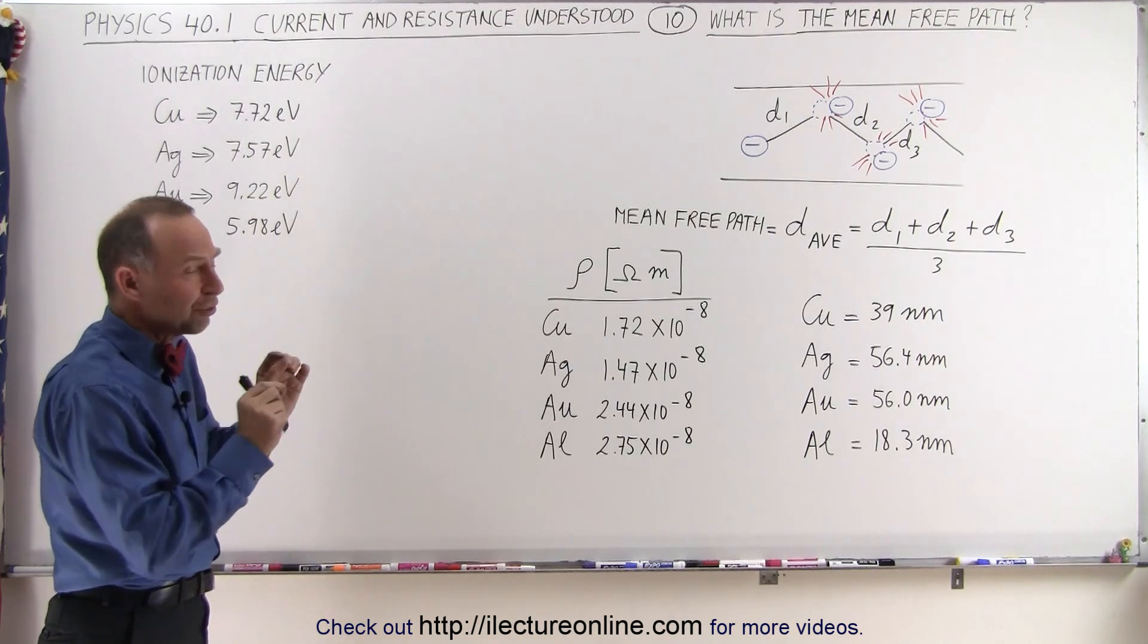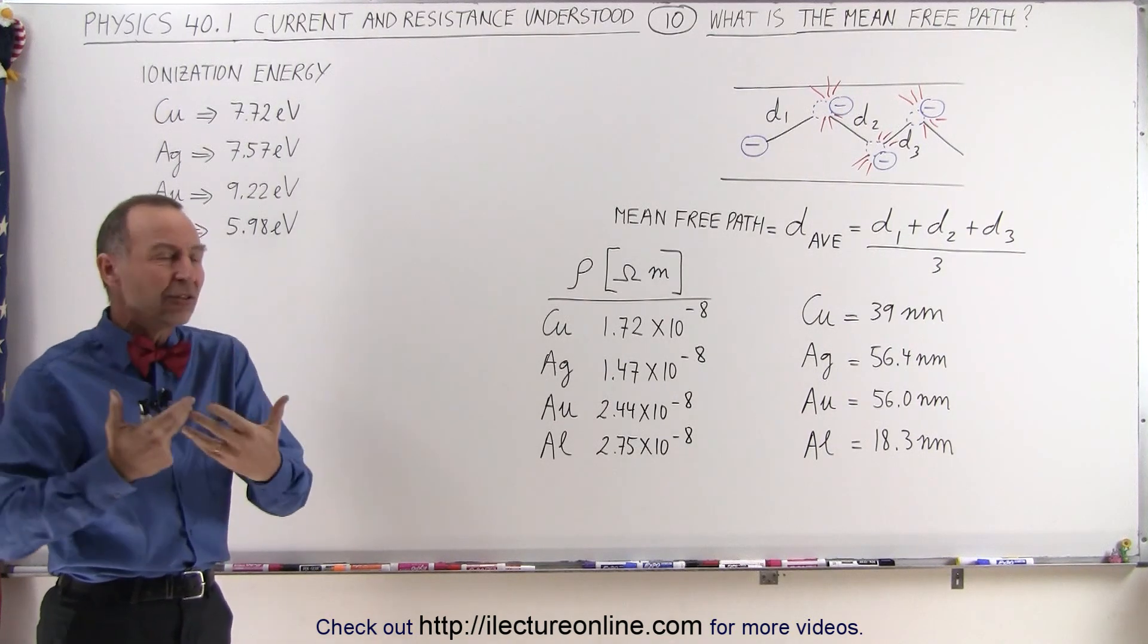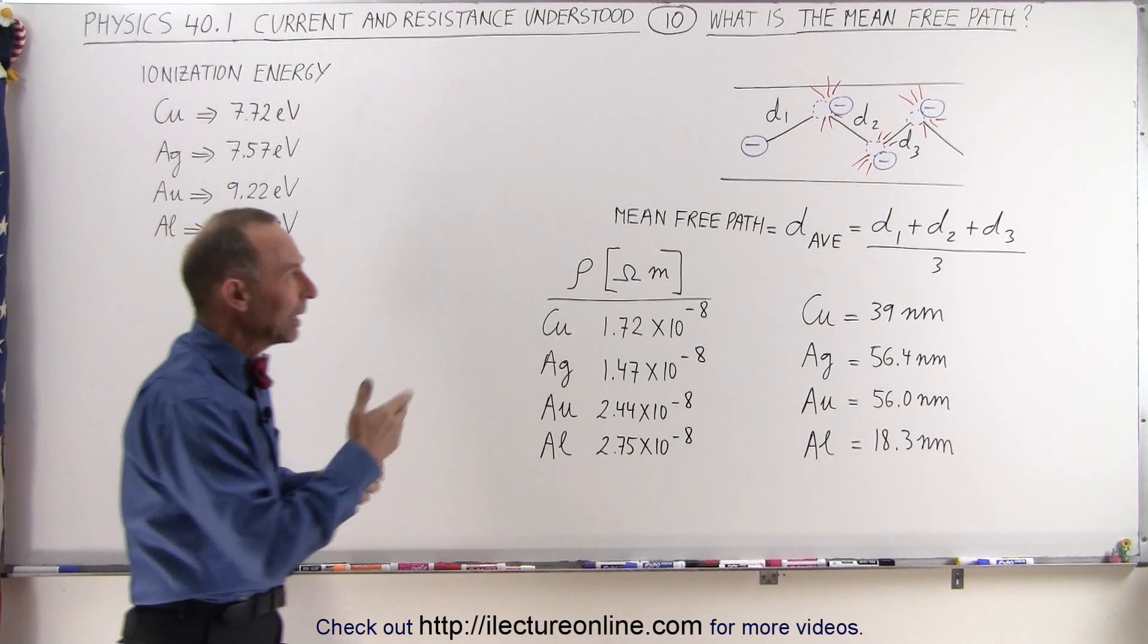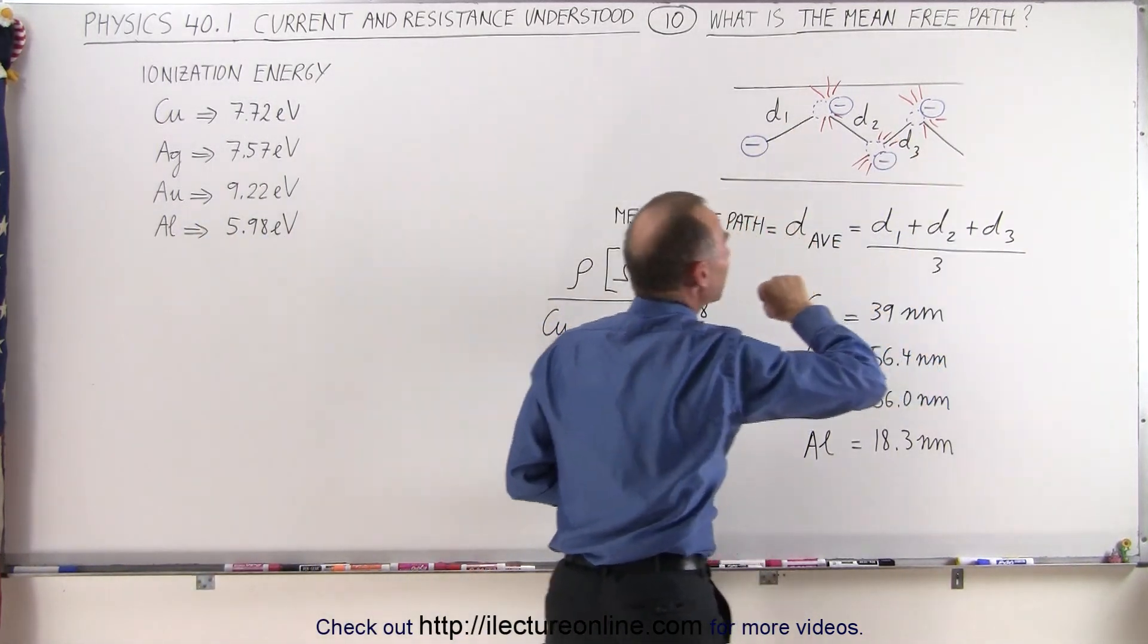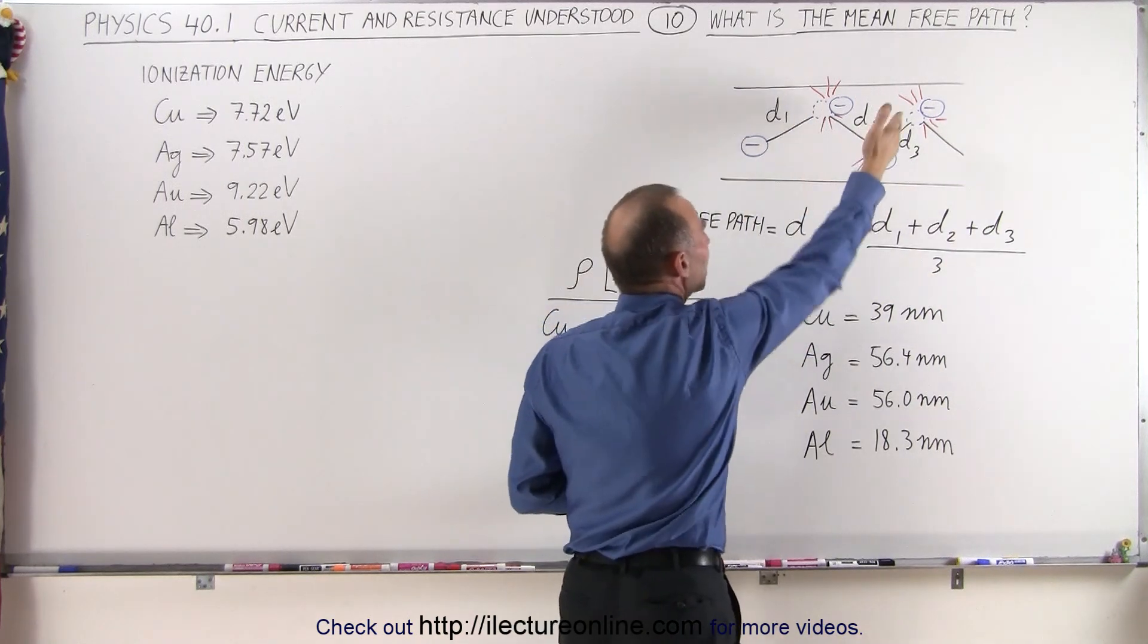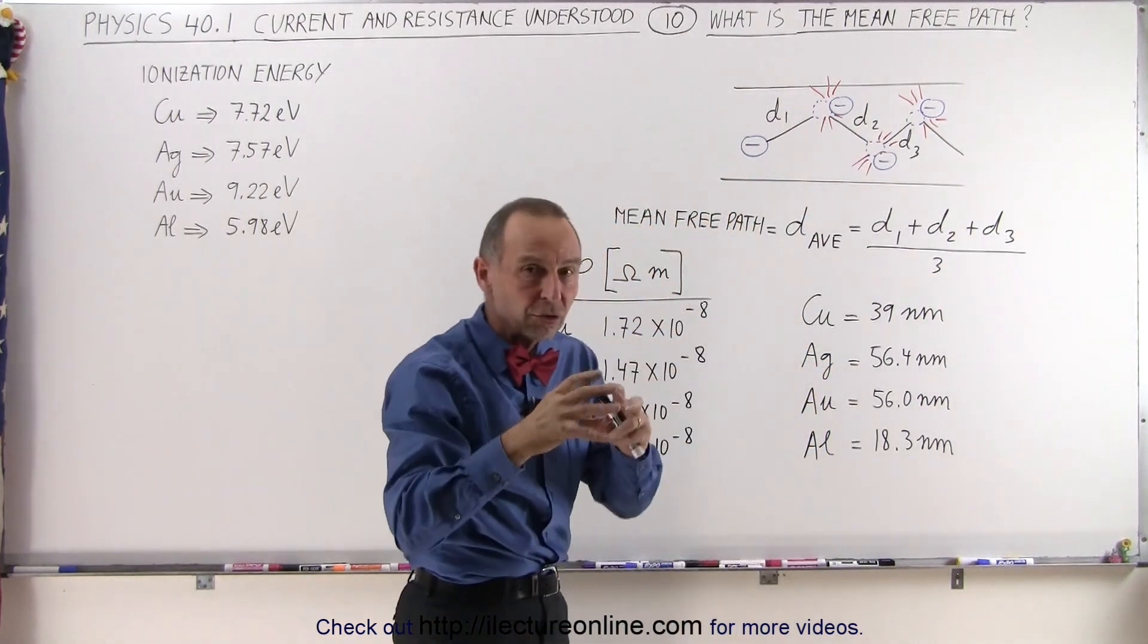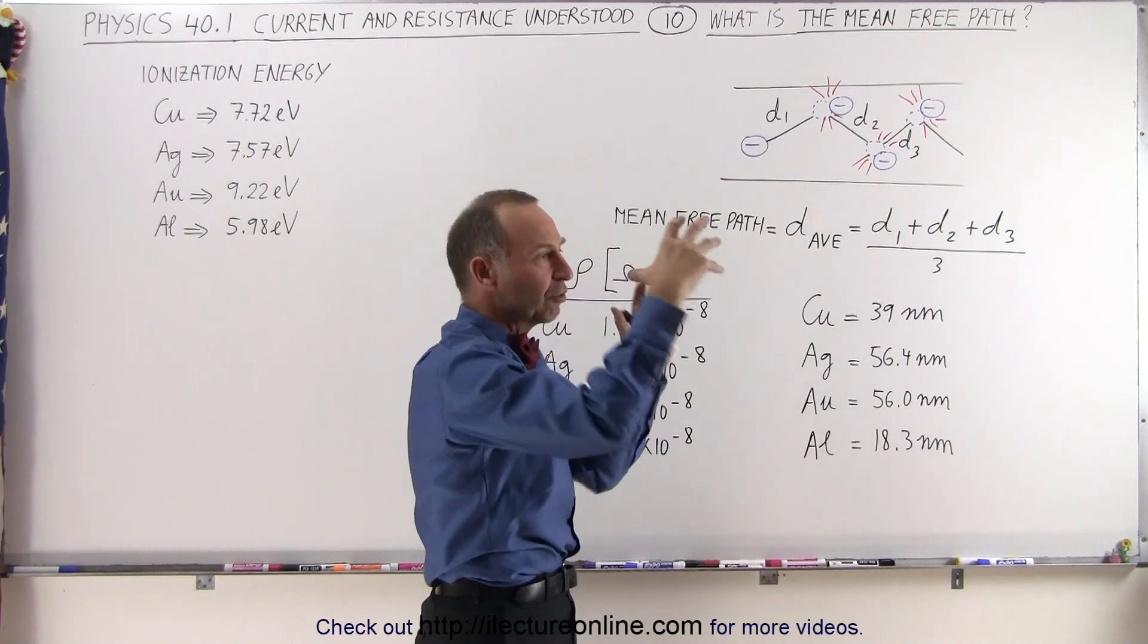So there's two things we're going to consider. First of all, the concept of what is a mean-free path. And as you can see here illustrated, an electron trying to move through the conductor is going to be colliding with the atoms that are in the conductor, which of course have the other electrons around them.